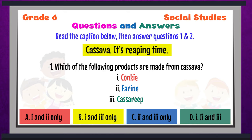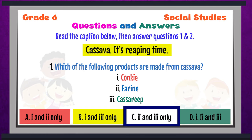Read the caption below, then answer questions 1 and 2. Cassava: it's reaping time. Which of the following products are made from cassava? 1 — conky; 2 — farine; and 3 — casri. Answer A: combination of 1 and 2; answer B: 1 and 3; answer C: 2 and 3; answer D: 1, 2, and 3. The answer for question 1 is C — farine and casri. Two and three are products that are made from cassava.